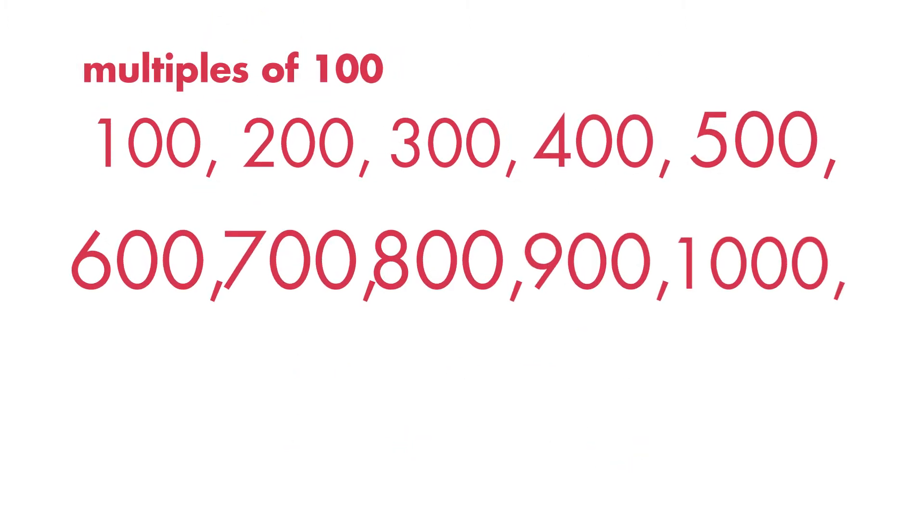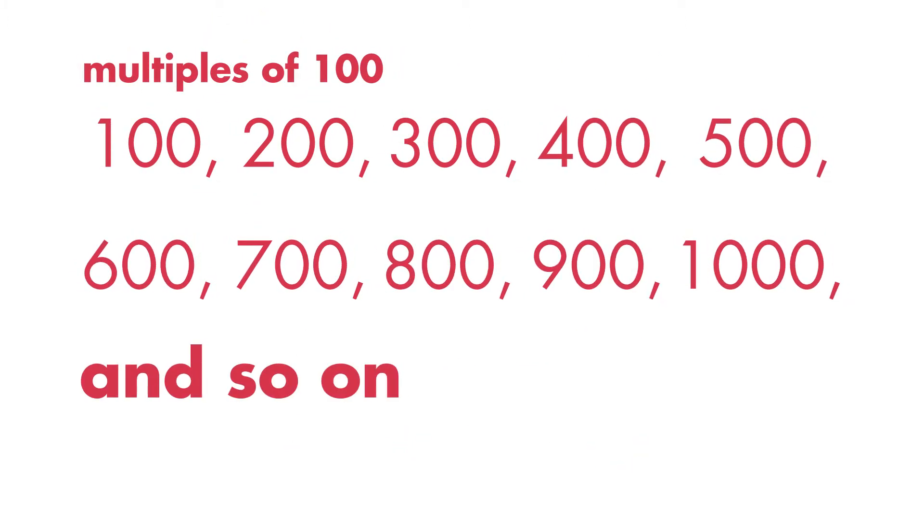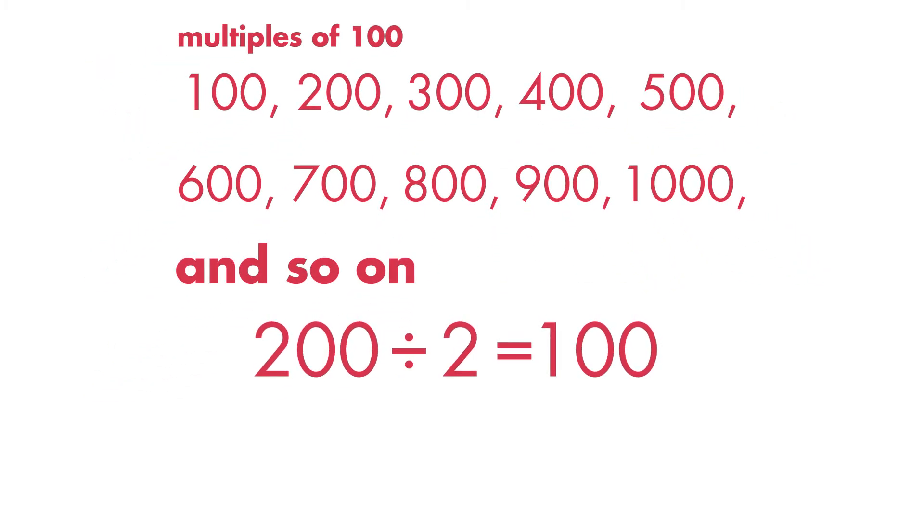A multiple of 100 is any number that can be evenly divided by 100. 200 divided by 2 is equal to 100, so 200 is a multiple of 100.